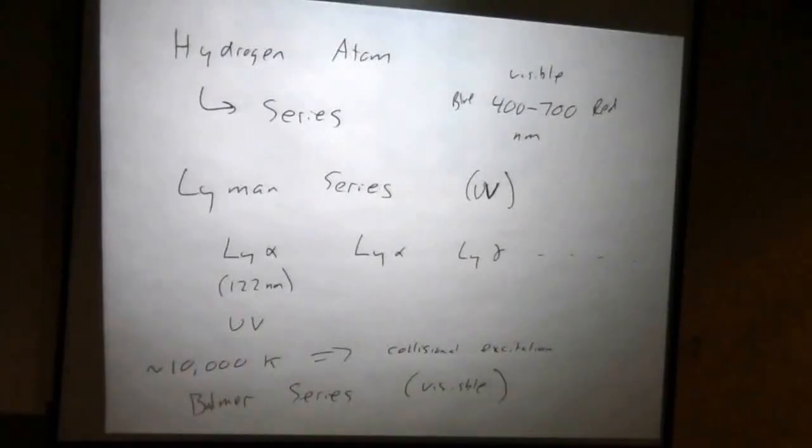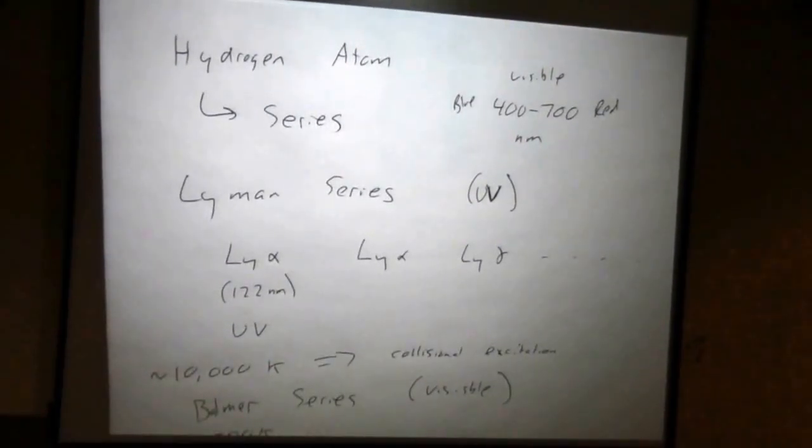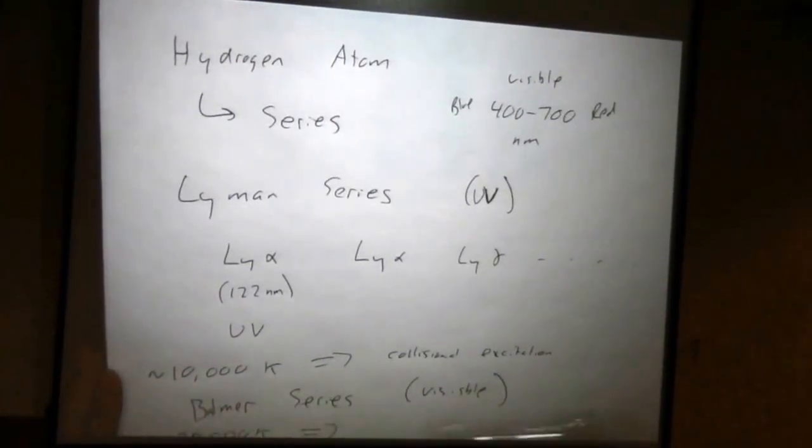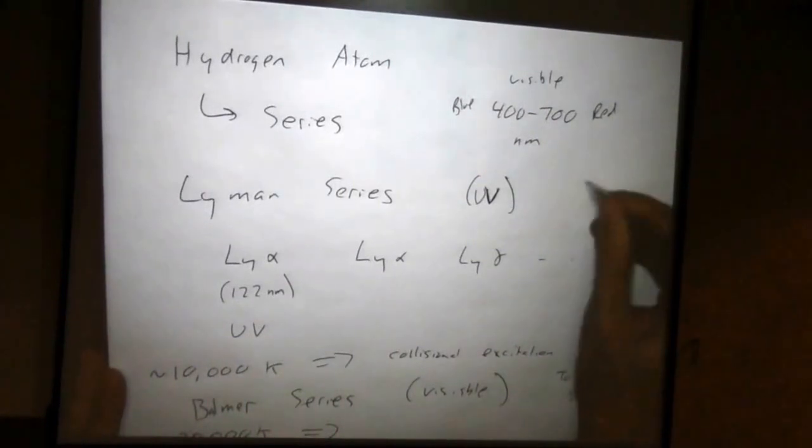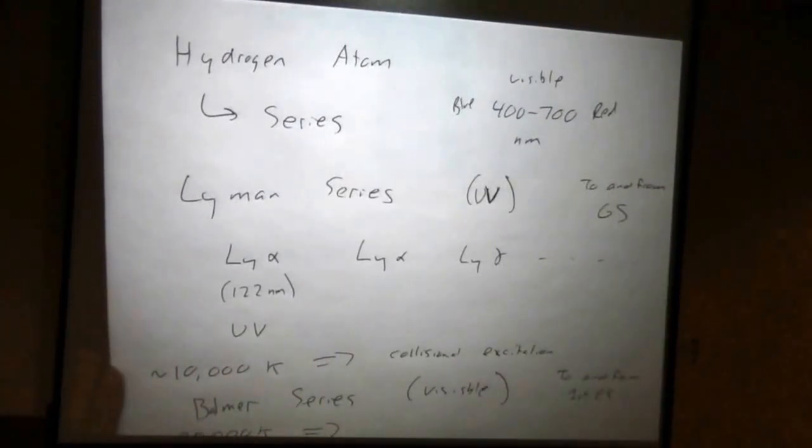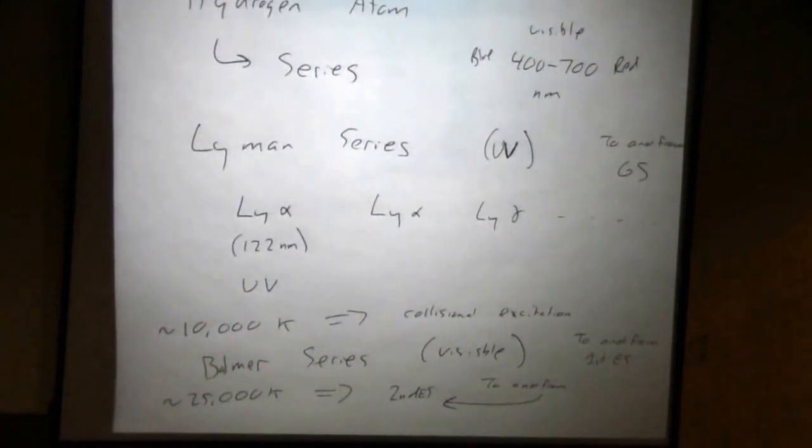Well, if you heat the gas up even more, let's say 25,000 Kelvin, then you can have, through collisional excitation, you can get up into, let's put notes here, next, Balmer series. This is everything to and from the first excited state. Lyman is everything to and from the ground state. If we're up to 25,000 Kelvin, collisionally we're exciting all the electrons, for the most part, up to the second excited state. So everything to and from the second excited state gives you what we call a Paschen series.